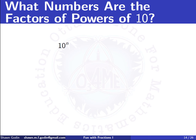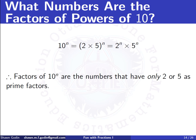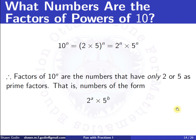Next we should figure out what numbers go into 10 to the n, so we can use this rule. Well, 10 to the n equals 2 to the n times 5 to the n. Or think of it as 2 times 5 repeated n times — by commutativity and associativity, we can bring all the 2s together and all the 5s together. That tells us the factors are numbers that only have 2s and 5s as their prime factors: numbers of the form 2 to some exponent times 5 to some exponent.